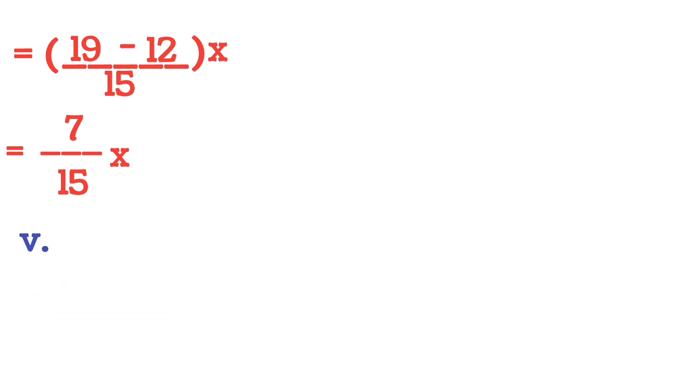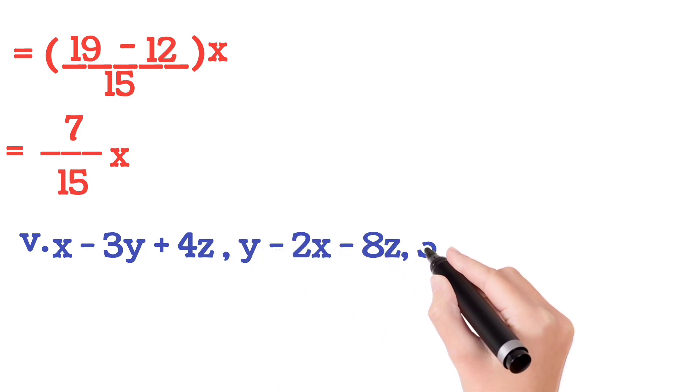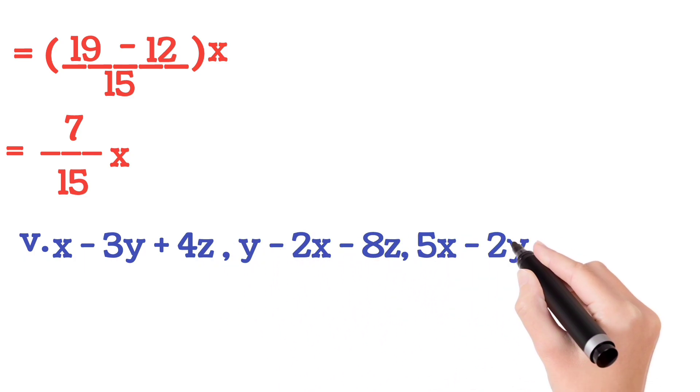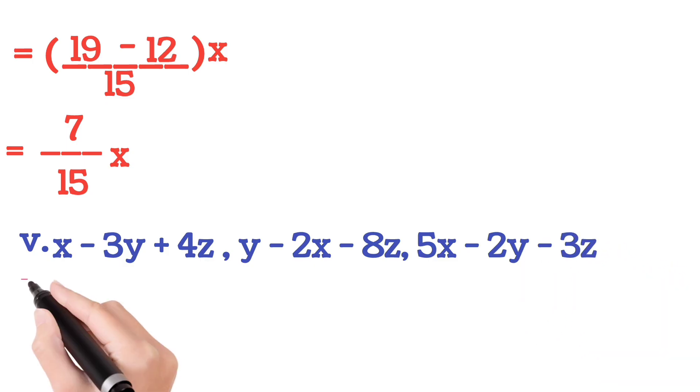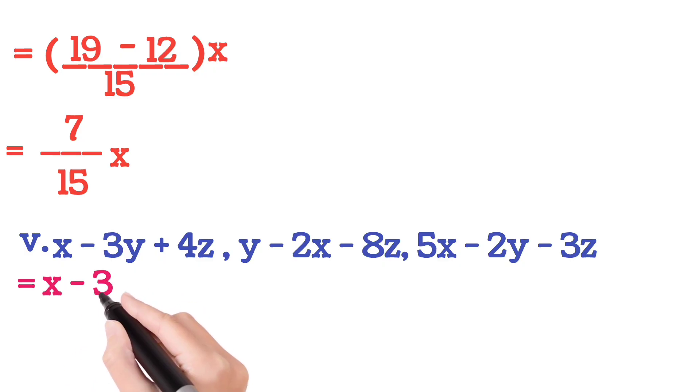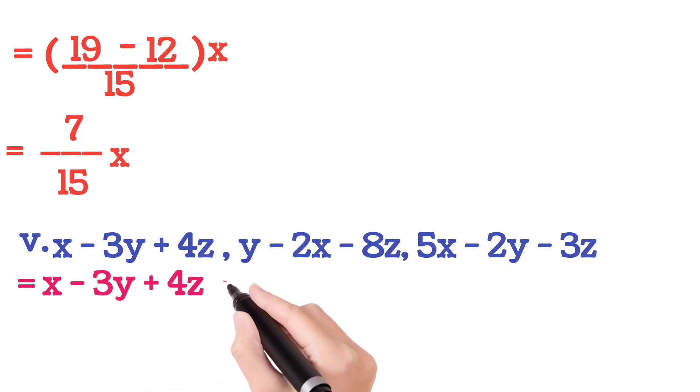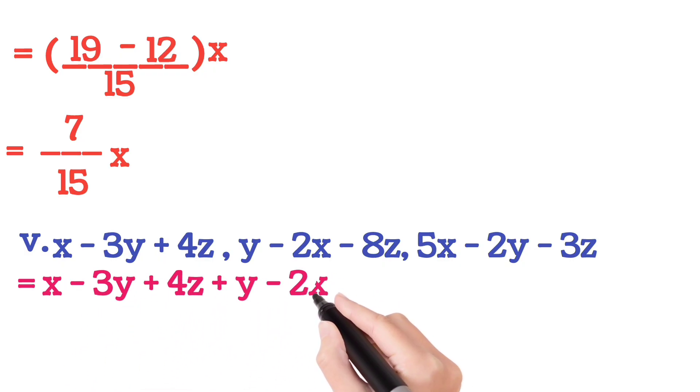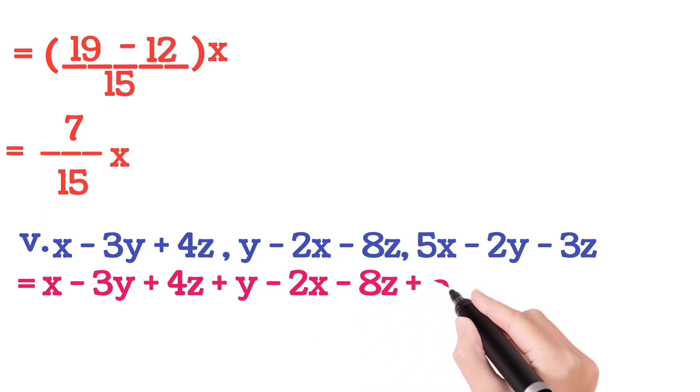Now go for the next sum, that is sum number 5: X minus 3Y plus 4Z, Y minus 2X minus 8Z, and 5X minus 2Y minus 3Z. So all the three trinomials we will write with plus sign. You just see properly how I am writing.